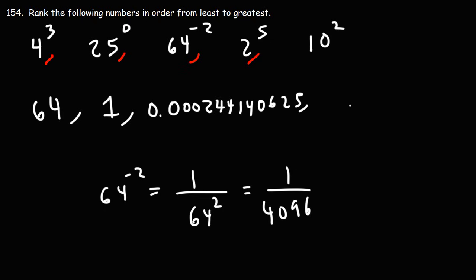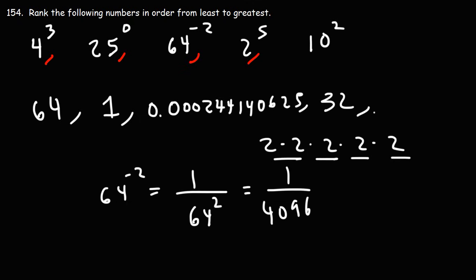2 to the fifth power — if you multiply 2 by 2 by 2 by 2 by 2, you get 4, 8, 16, 32. And 10 squared: 10 times 10 is 100.